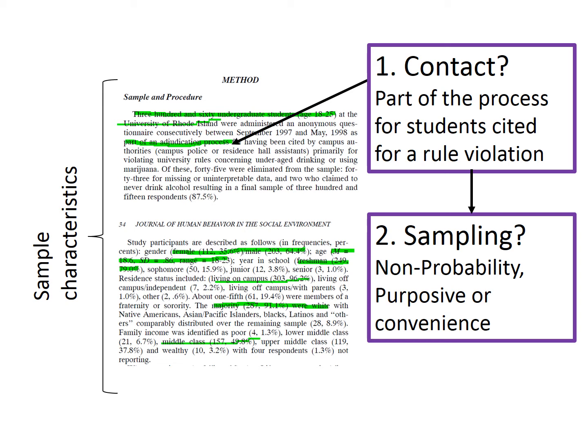Hopefully you found it was fairly easy to find the section with this information. Adjudication processes refers to the process students have to go through if they were cited and want to continue as a student. It looks like they contacted participants by including the study as part of the process required for students who were cited for a rule violation. Although there are some questions about the population of interest, it appeared to be larger than students at a single university. Given that, this would be a non-probability sample. The fact that they only included students who had been cited for a rule violation could be considered purposive sampling, but it would also be accurate to simply refer to it as convenience.